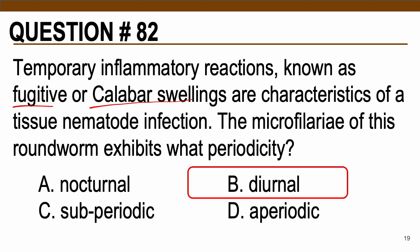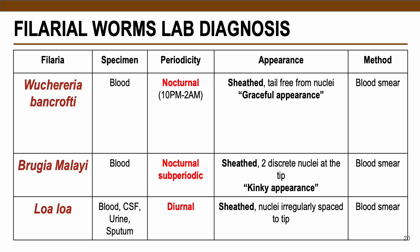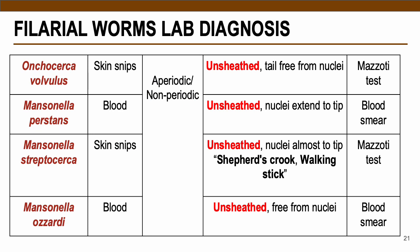Here are the three filarial worms that exhibit periodicity. For Wuchereria bancrofti, this is nocturnal — microfilariae are more common in the blood during nighttime. For Brugia malayi, this is nocturnal subperiodic, meaning more common at night but can also be present during the day. For Loa loa, the correct answer is diurnal — strictly during the day. The other filarial worms are all aperiodic or non-periodic, meaning they do not exhibit periodicity and can be acquired any time of day, often in the skin rather than blood.